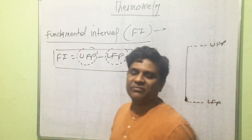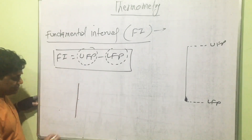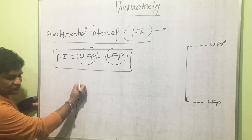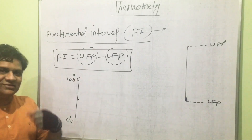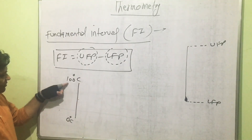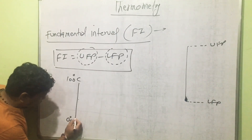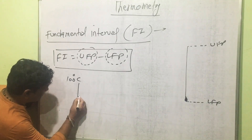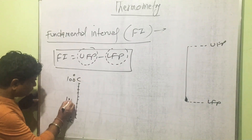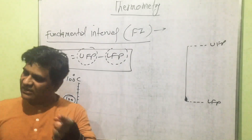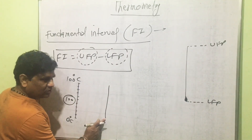Now let's discuss fundamental interval in another way using the diagram of a thermometer. Here, the lower fixed point is 0°C and the upper fixed point is 100°C on the centigrade scale. The fundamental interval is 100, and the total number of divisions is also 100 — from 0, 1, 2, 3, 4 up to 100 divisions.